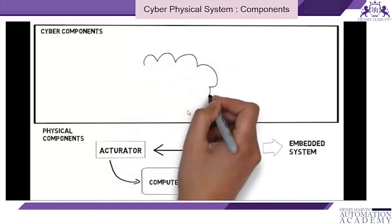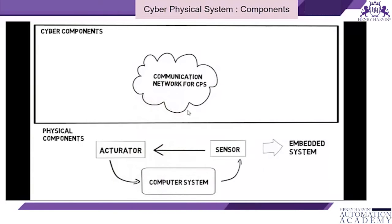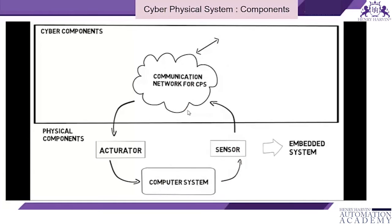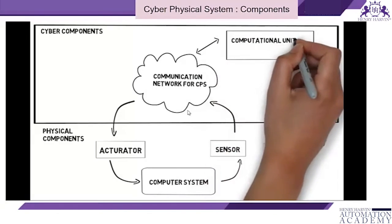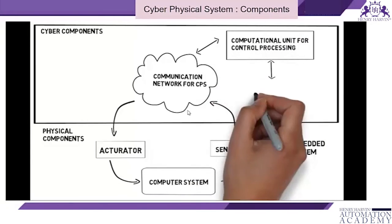In a cyber physical system, these embedded systems do not stand alone anymore. They share their data via a communication network like the internet with cloud computing, so data from many embedded systems can be collected and processed, creating a system of systems. Connected embedded systems can be controlled in a decentralized way via one computational unit, and data can be processed automatically or through a human-computer interface.